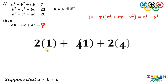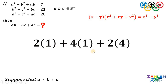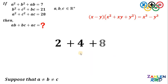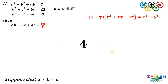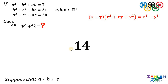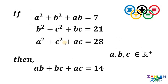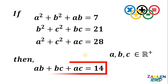We are now ready to find the numerical value of ab plus bc plus ac. We have a equals 2, b equals 1, and c equals 4. So we compute 2 times 1 plus 4 times 1 plus 2 times 4, which gives 2 plus 4 plus 8, which is simply 14. Therefore, given these three equations, the value of ab plus bc plus ac must be 14. And, as always, we are done.